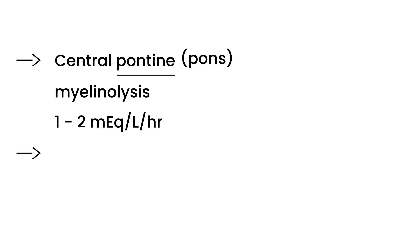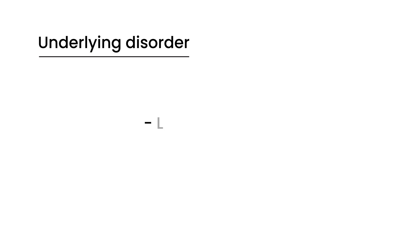You only correct by 1 to 2 mEq/L per hour. Another thing that's given is Lasix, because ADH — antidiuretic hormone — is doing the opposite of a diuretic. So you give Lasix, which is a diuretic, to counter the effects and help increase free water excretion rather than reabsorbing it. The other thing you need to do is investigate the underlying disorder, because SIADH is really a result of something else. Does this person have a lung condition, a CNS disorder? Look at their medications.